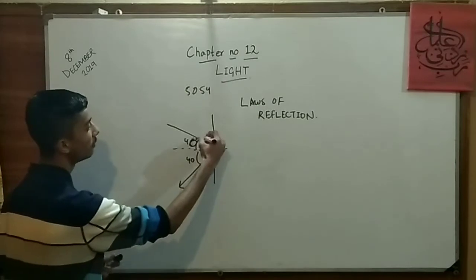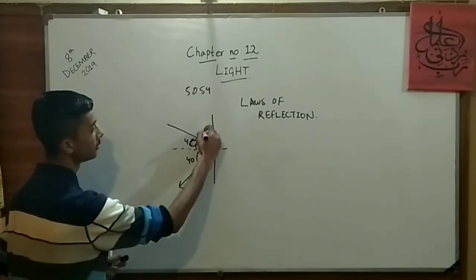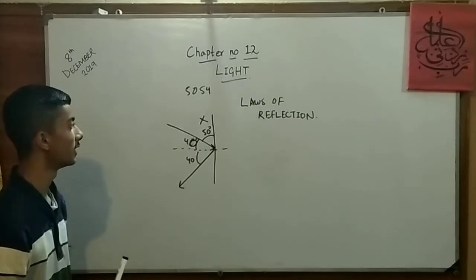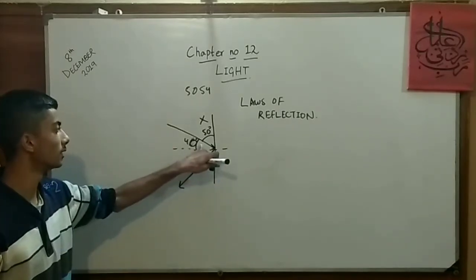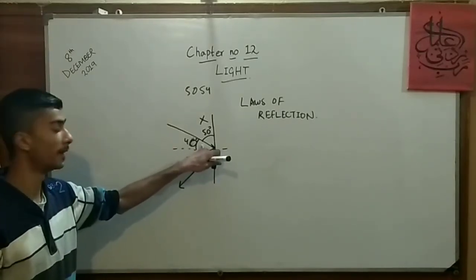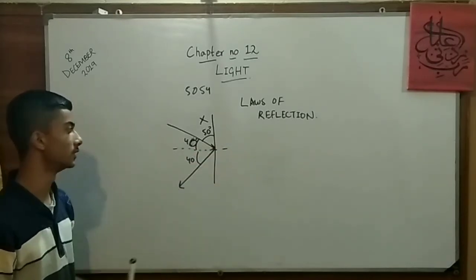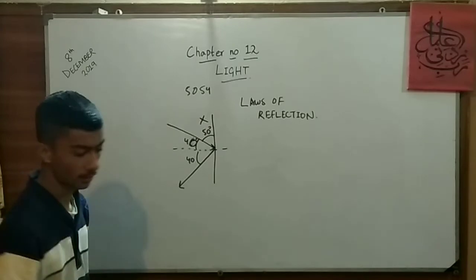But if the angle would be formed as 50 degrees, this will not be considered as an angle of incidence because it is not forming with a normal. Now the angle should be mandatory that it should be formed with a normal, so it would be considered as an angle of incidence.